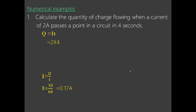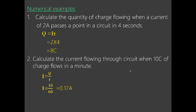Example 1: Calculate the charge flowing when a current of 2 amperes passes a point in a circuit for 4 seconds. Using Q = It: Q = 2 × 4 = 8 coulombs. Example 2: Calculate the current flowing through a circuit when 10 coulombs of charge flows in one minute (60 seconds). Using I = Q/t: I = 10/60 = 0.17 amperes.